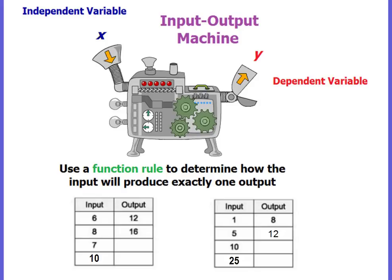Okay, let's review. Let's go back to elementary school — you remember the input-output machine? Sometimes it was called the function table or function machine. This is where you input a number, and it goes through a rule, and it spits out a specific number.